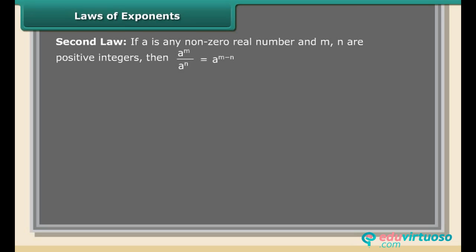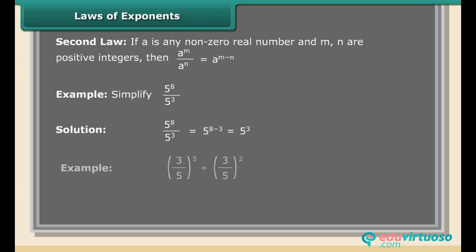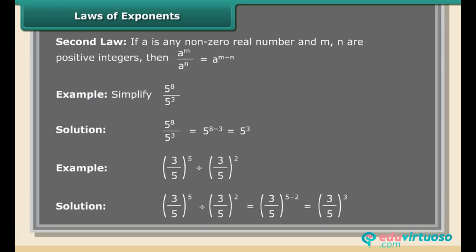Second Law: If A is any non-zero real number and M, N are positive integers, then A raised to the power M upon A raised to the power N equals A raised to the power M minus N. Example: 5⁸ ÷ 5³ = 5^(8-3) = 5⁵. Example: (3/5)⁵ ÷ (3/5)² = (3/5)^(5-2) = (3/5)³.